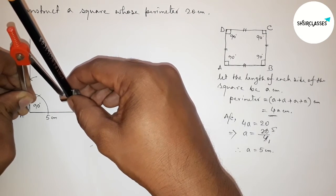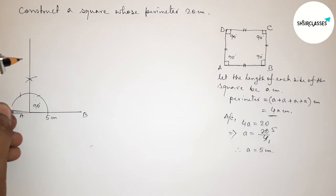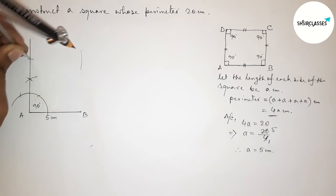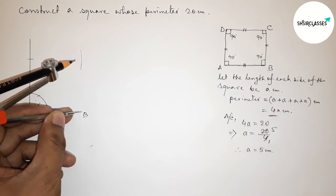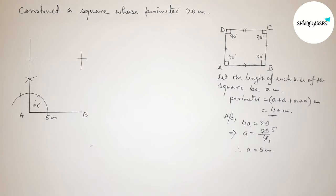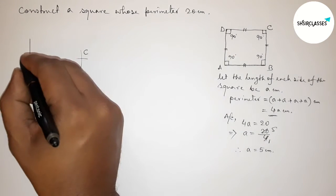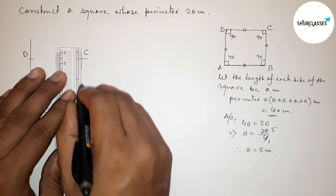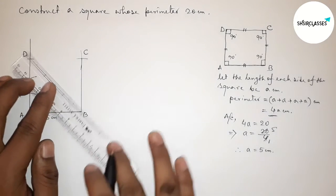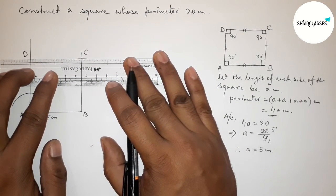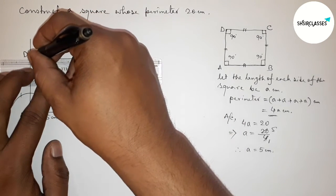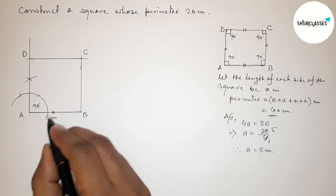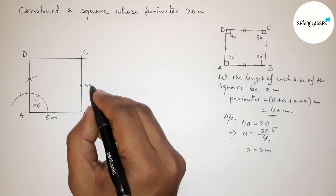With the same length, cutting arcs at the required points. Taking point C and point D. Joining line BC first, then joining side CD to complete the square ABCD.